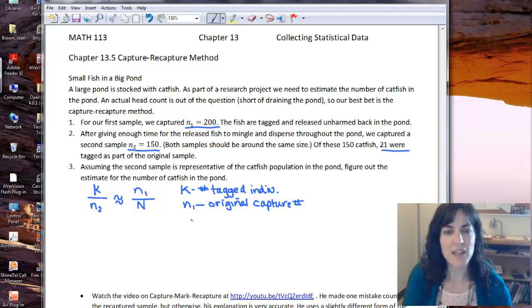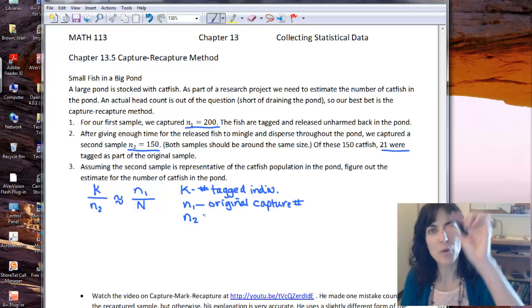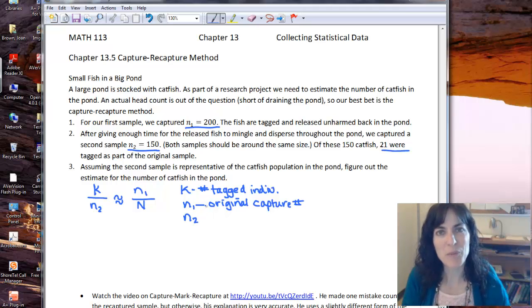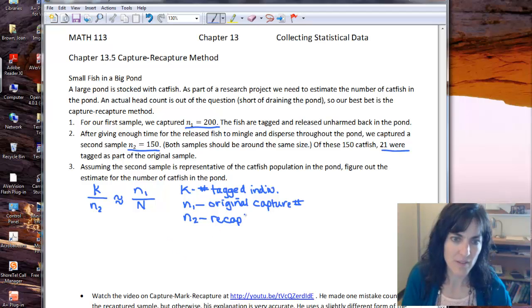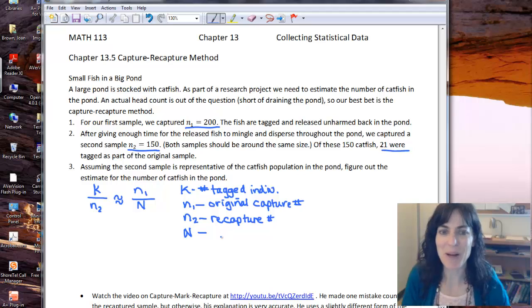Number, how many? And then N₂, we say sub when the number is down below. Remember that from our Fibonacci chapter? So that's the same kind of thing, a subscript, and it lets us use little N two times. One time for the original capture, and one time for the recapture. And then finally, our big N—I hope you're saying to yourself that's got to be the population, and it is, it's the size of the population.